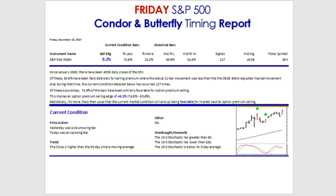That's our benchmark measurement: two-thirds of the bars are favorable for trading condors and butterflies. Now, when people trade condors and butterflies, when they lose, they lose big. So we really need to look at the market condition and see if there's an edge right now.